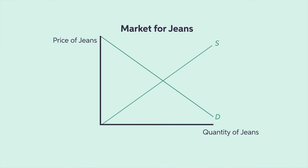It's based on the assumption that it costs money, time, and resources to produce goods and services. Here we see a market for jeans. If not enough jeans are produced, the price will increase and few people will buy them. If too many jeans are produced, then they will be too cheap and the company will struggle to stay afloat.